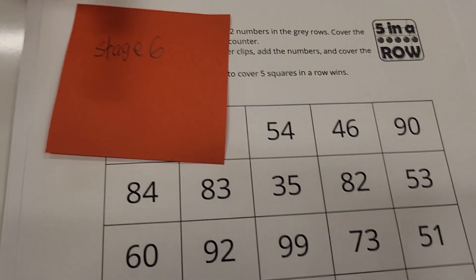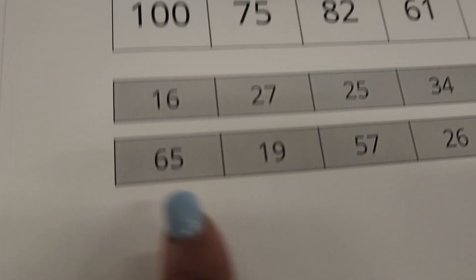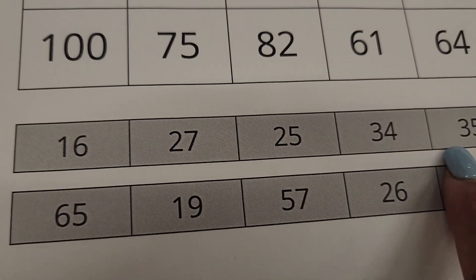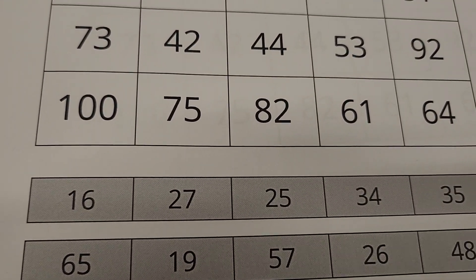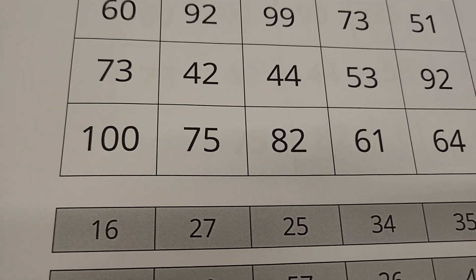Stage six, as you can see, is double digits. The addends are all in double digits. It gets higher as you move from stage to stage.